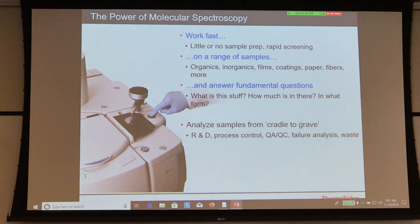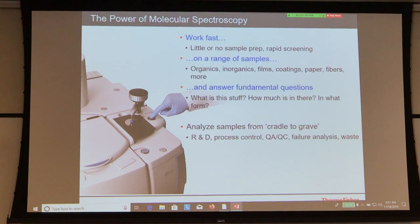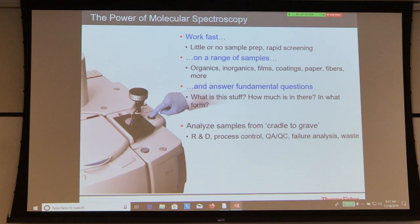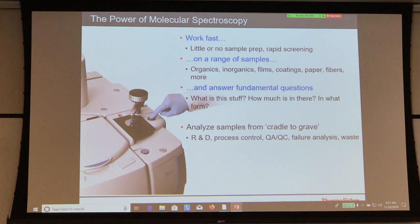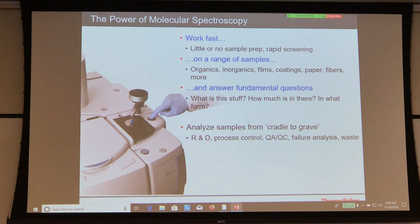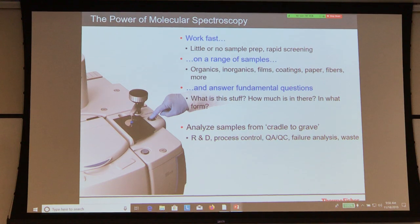So, FTIR spectroscopy has been around for a very long time. The reason is almost no sample prep, and it's one of the fastest ways to analyze. If you go to a production facility or a raw materials place where something is being manufactured, they all have an FTIR because they want to see whether the raw material is pure, whether the material has gone through any changes, degradation, and so forth. With IR you can analyze organics, inorganics, films, coatings, papers, and almost anything under the sun.